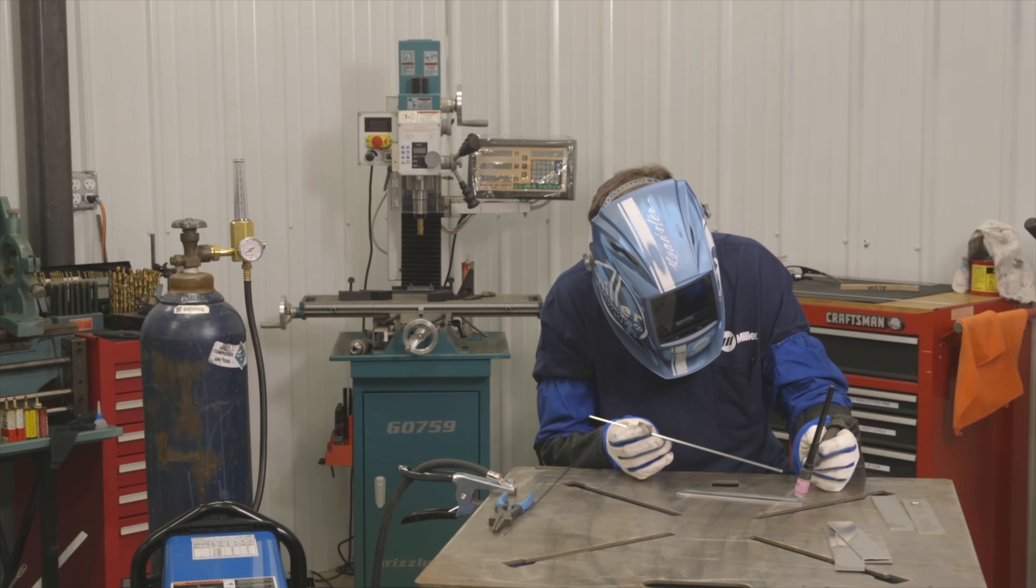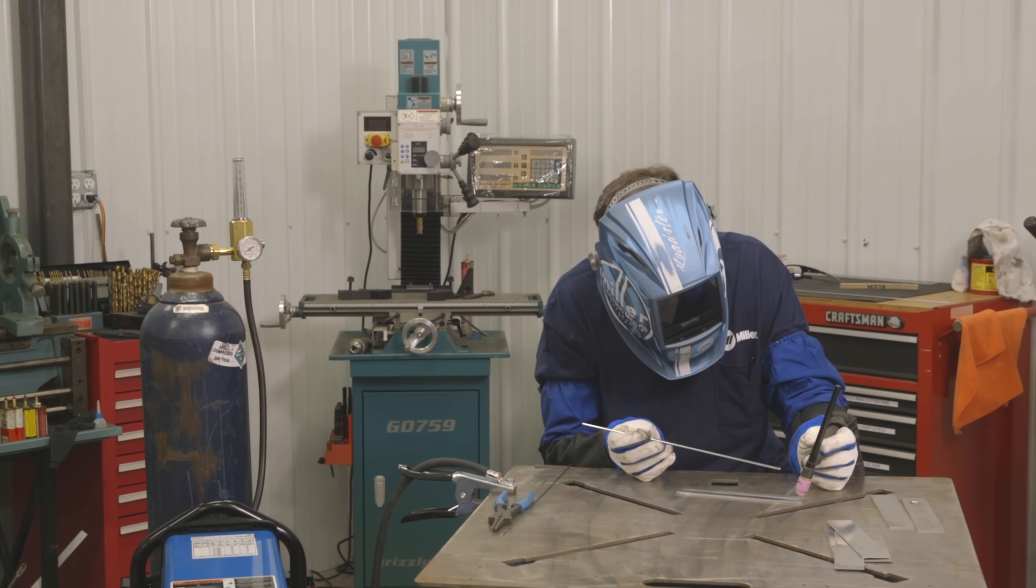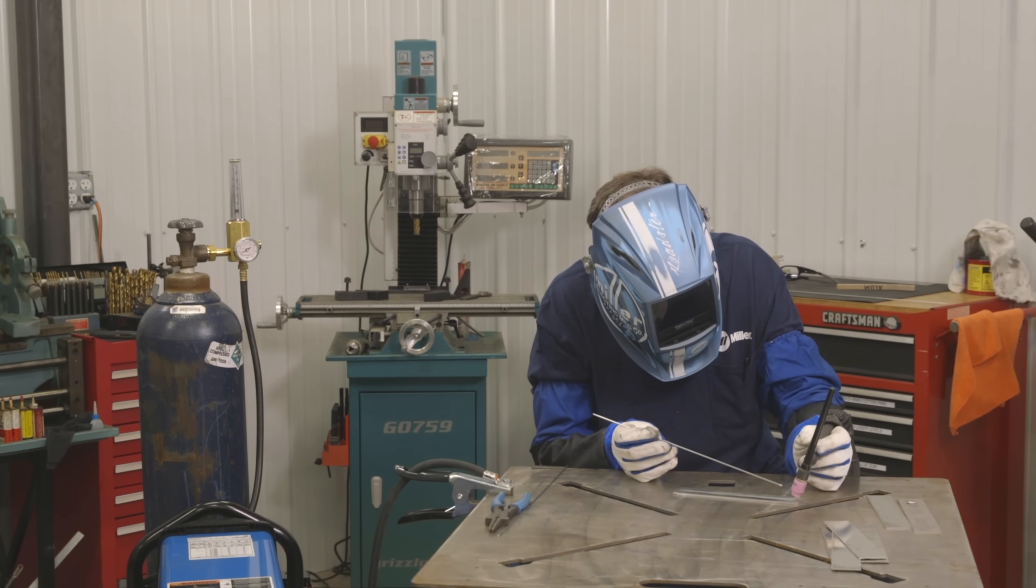This is an example of a slow pulse where it's going to help me with adding my filler metal. So you can see as the arc jumps up to its high level I'm adding the filler metal, as the arc goes to its low level I'm moving the torch over.